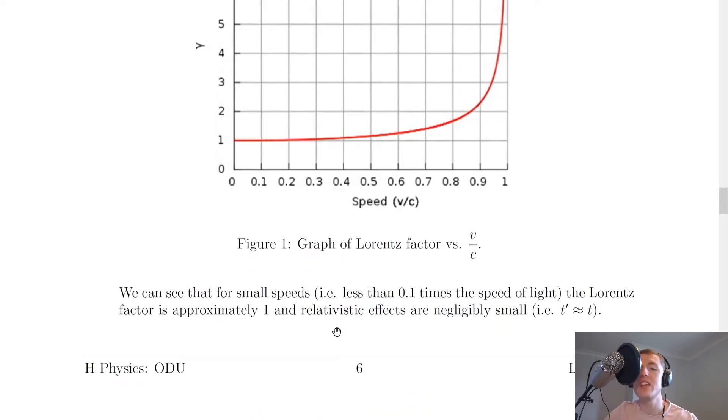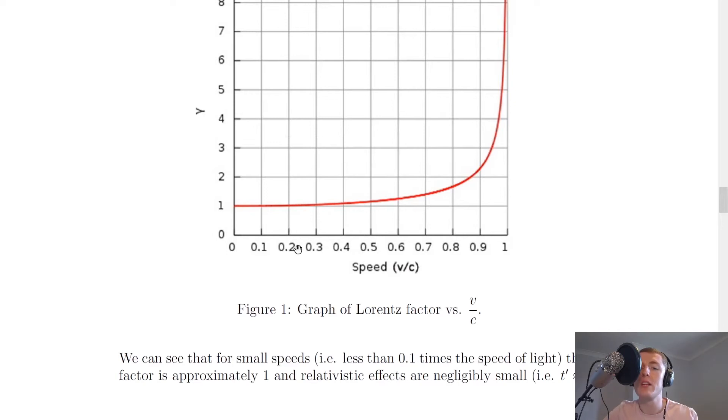And what's going on here is it says down the bottom, we can see that for small speeds, i.e. less than 0.1 times the speed of light, the Lorentz factor is approximately 1, and relativistic effects are negligibly small. So for relatively low speeds, less than 0.1 times the speed of light, we can see we've very much got a linear relationship where gamma is equal to 1.